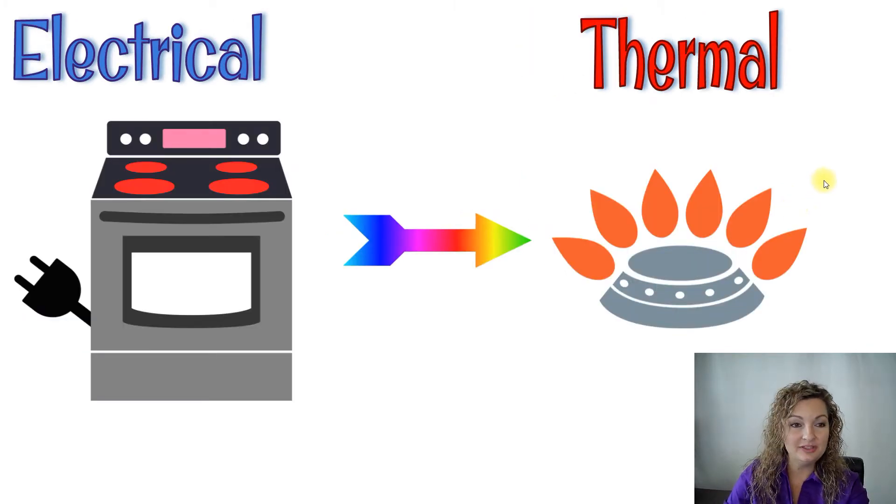Next example is a stove. If you have a stove that plugs into the wall, it receives electrical energy. You are taking that electrical energy, and once you turn it on and the burner gets hot, you are converting it into thermal energy, otherwise known as heat energy.